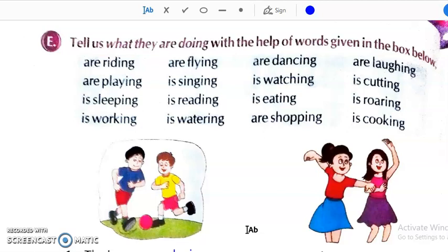And we had completed three exercises A, B and C and now we are going to do the exercises that is given on page number 54. Exercise E. Tell us what they are doing with the help of words given in the box.